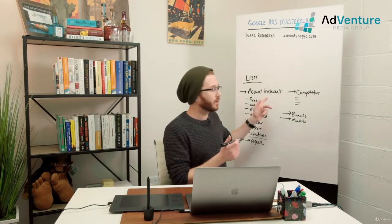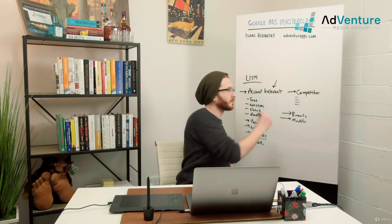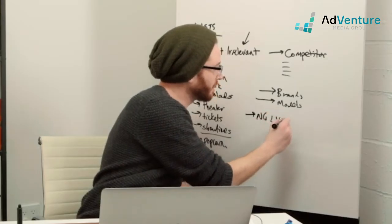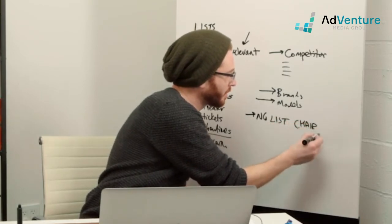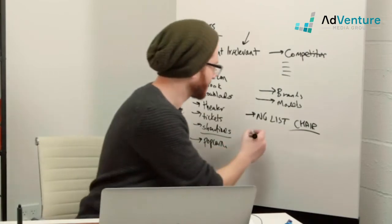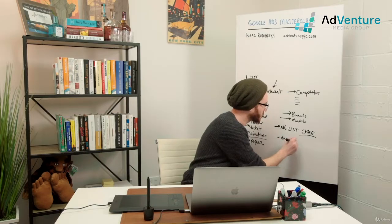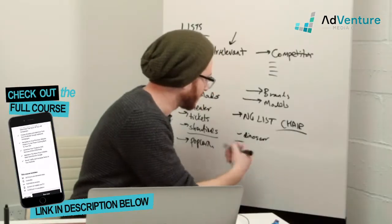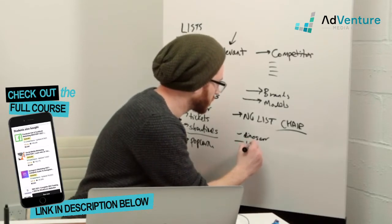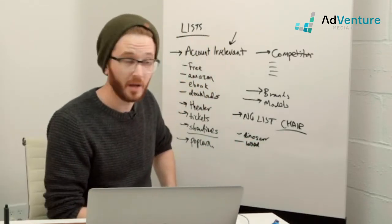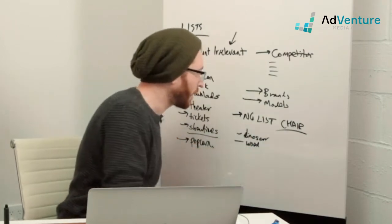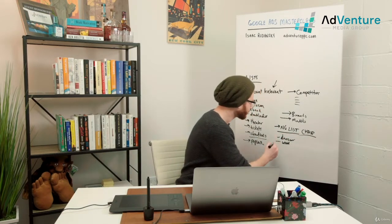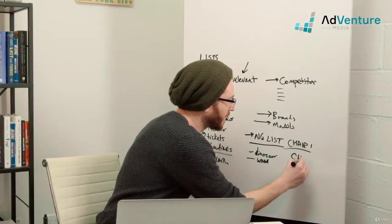The only use of negative keyword lists isn't necessarily account irrelevant terms. For example, you might have a negative keyword list applied to all your chair campaigns. Let's say you don't sell wood chairs but you do sell wood desks — those wouldn't be account irrelevant terms. But instead of adding them manually to every campaign, you could have one shared negative keyword list and apply it to all your chair campaigns.